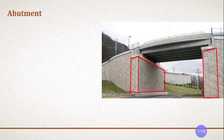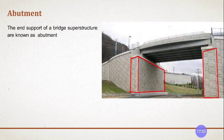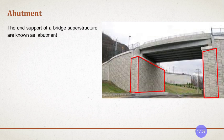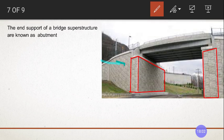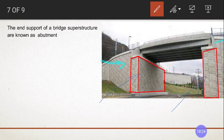Next is abutment. The end support of the bridge superstructure is known as an abutment. As said, if the bridge is multi-span, it requires intermediate supports called piers. The end supports at the start of the bridge and at the end of the bridge — at those portions we provide a support called an abutment. I have marked here with the red pen — this portion is the abutment.